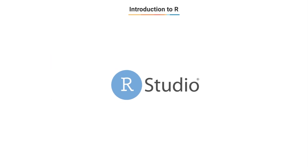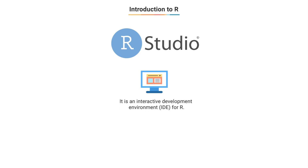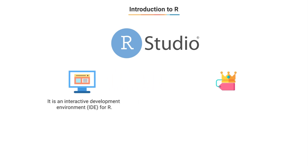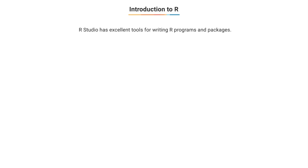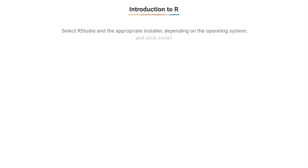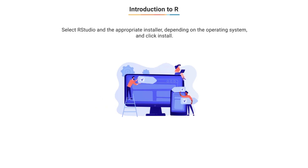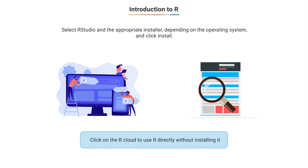Once we have completed our R installation, we will install RStudio. RStudio is an interactive development environment for R. Like R, RStudio is open-source software freely available for Windows, Mac OS, Linux, and Unix. Regardless of the R computing system, the user experience in RStudio is nearly identical. RStudio has excellent facilities for writing R programs and packages, and provides a convenient environment for statistical data analysis. We can select the appropriate installer for our operating system. There is also a facility to directly work on R without installing it by clicking on Rcloud.